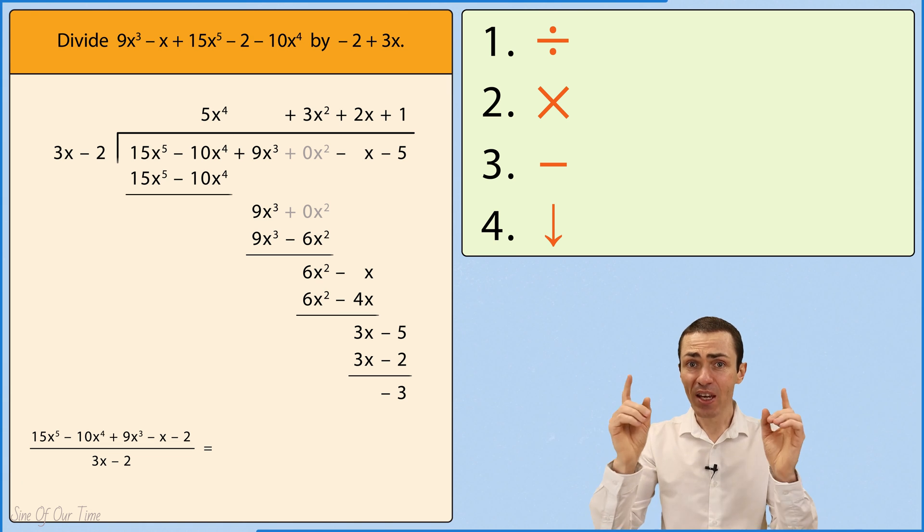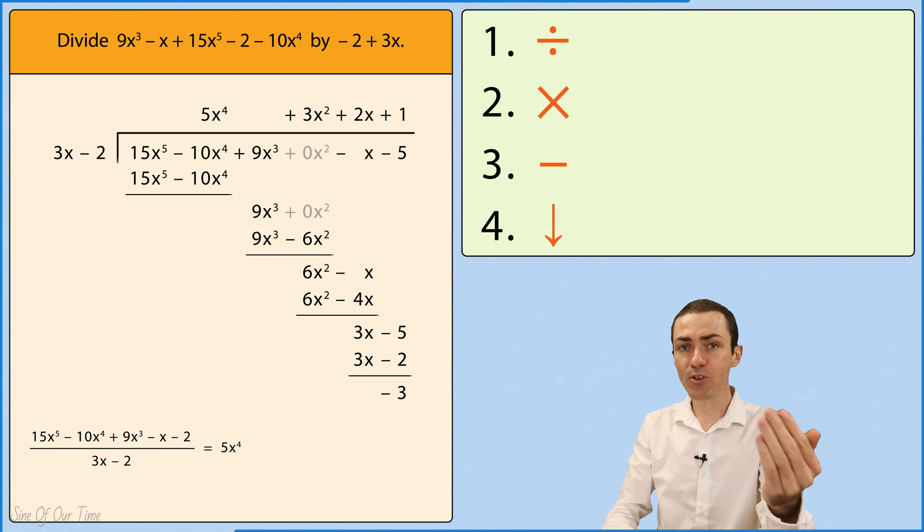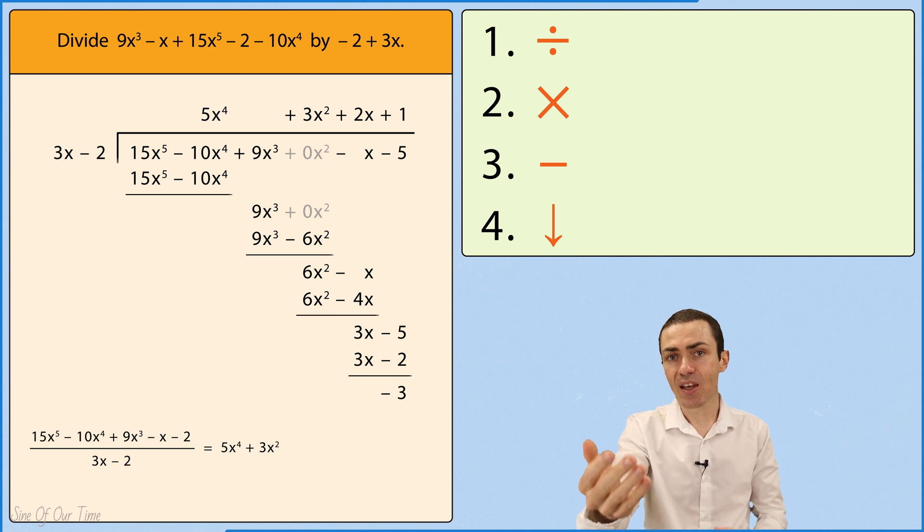After all of that, we can finally conclude that the quotient is 5x to the power of 4 plus 3x squared plus 2x plus 1.